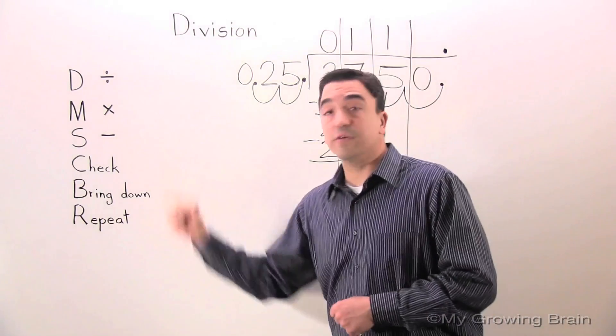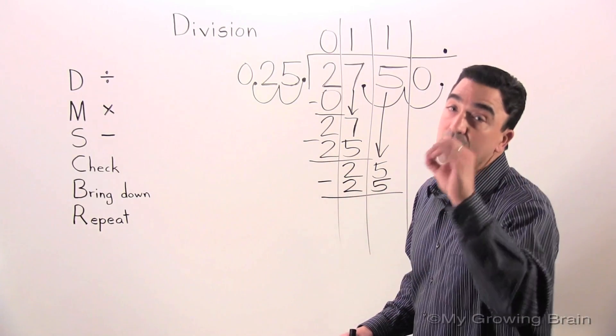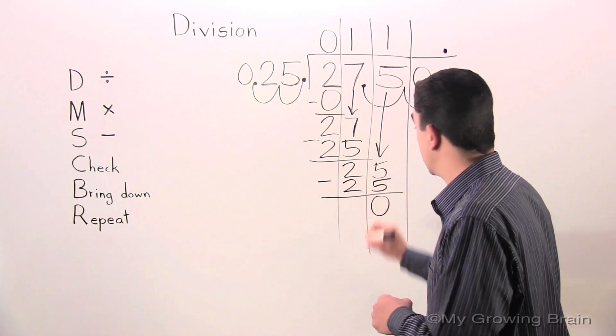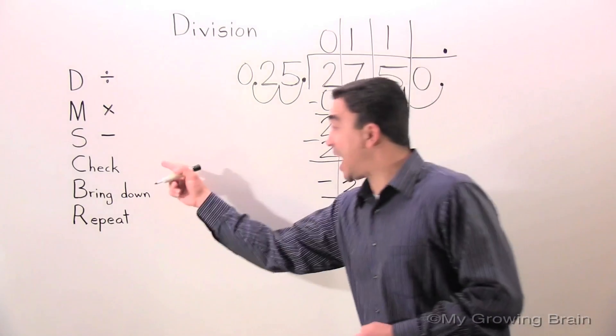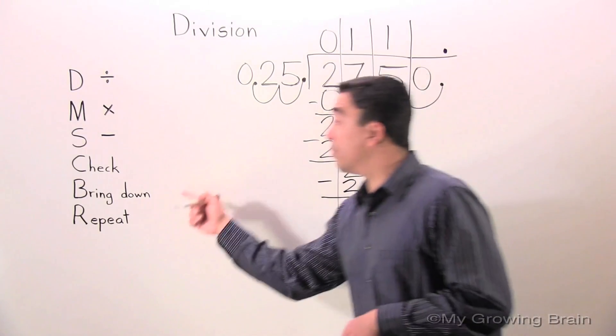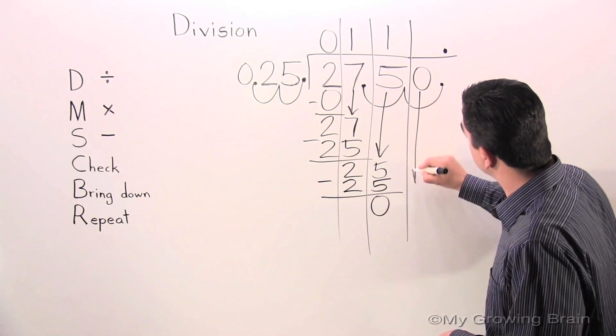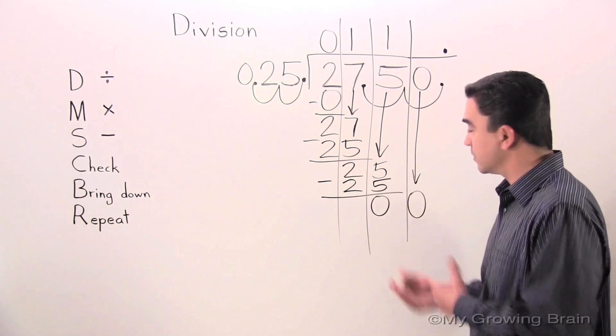Next step. Subtract. 25 minus 25 equals 0. Next step. Check. 0 is less than 25. Keep on going. Next step. Bring down. Bring down the 0. 0.